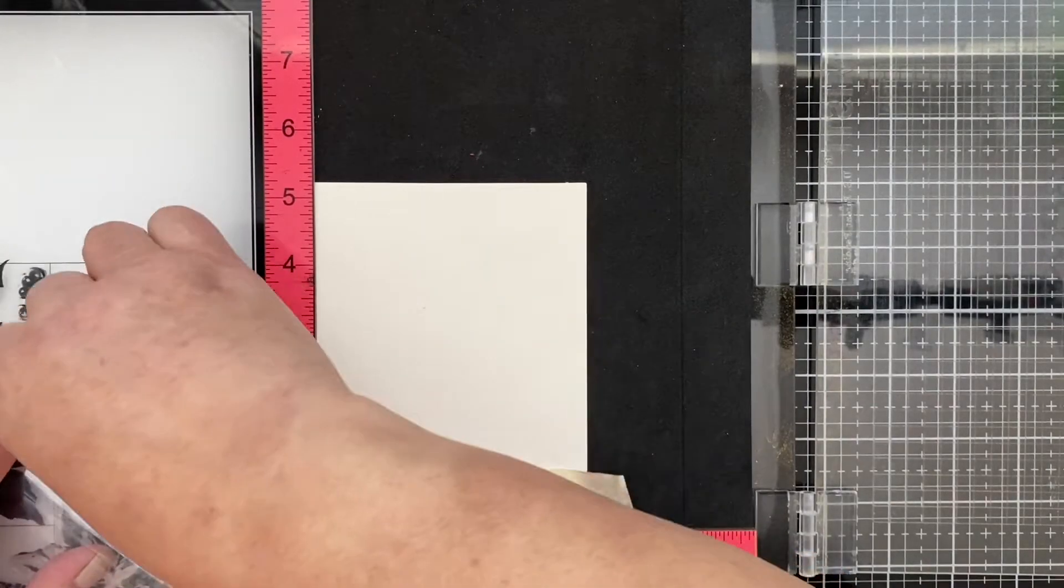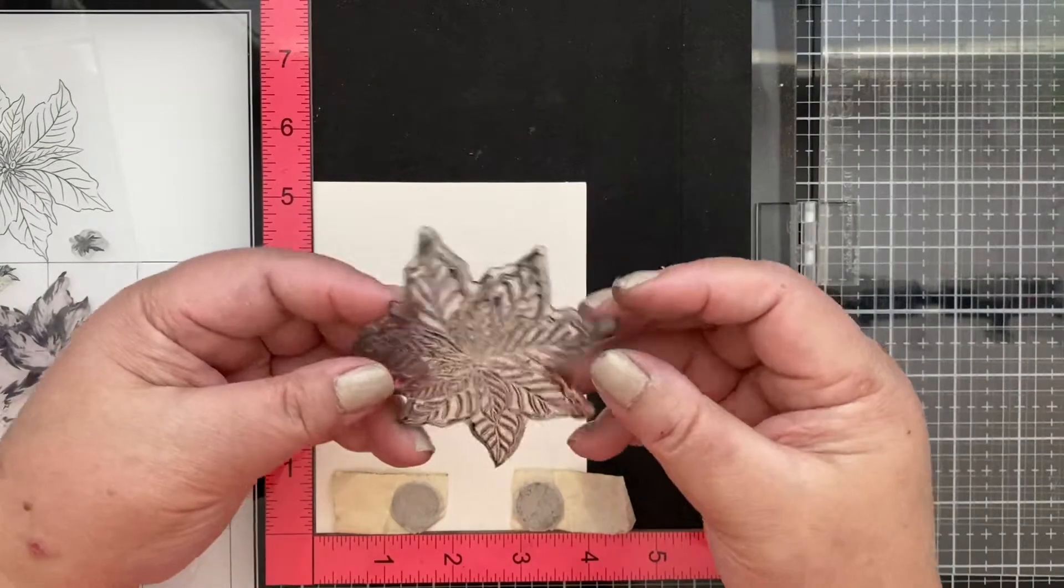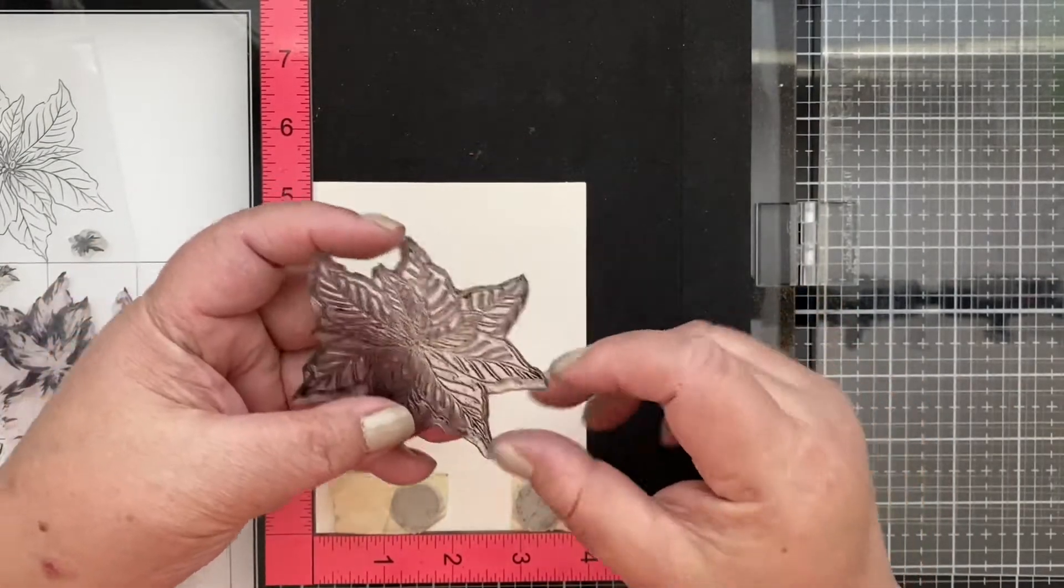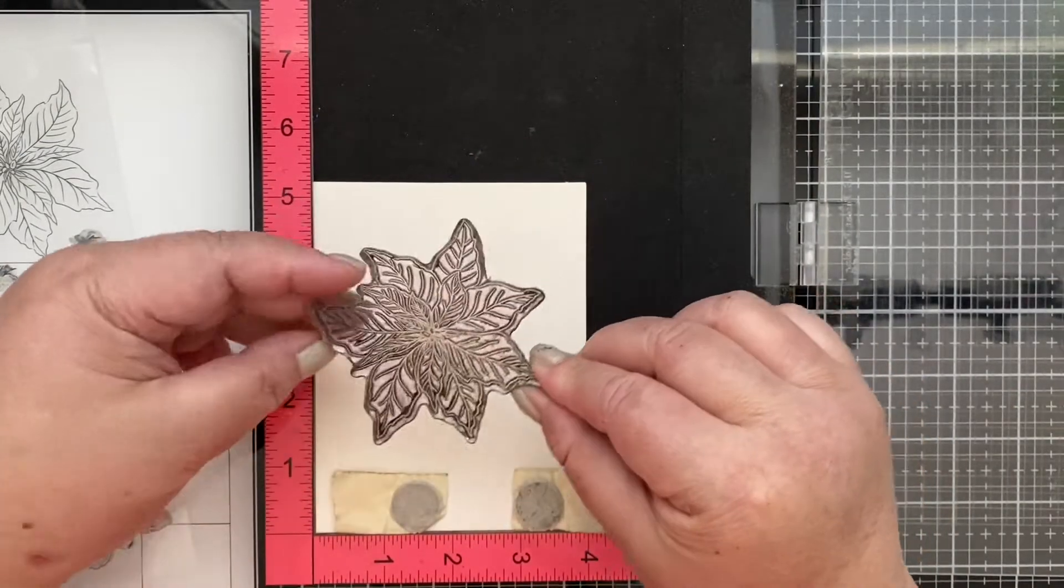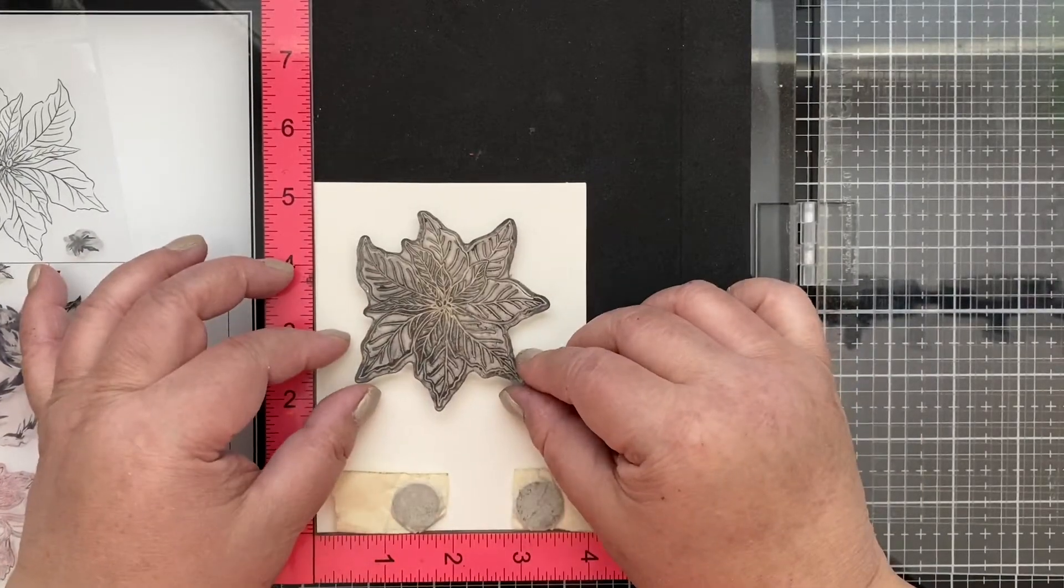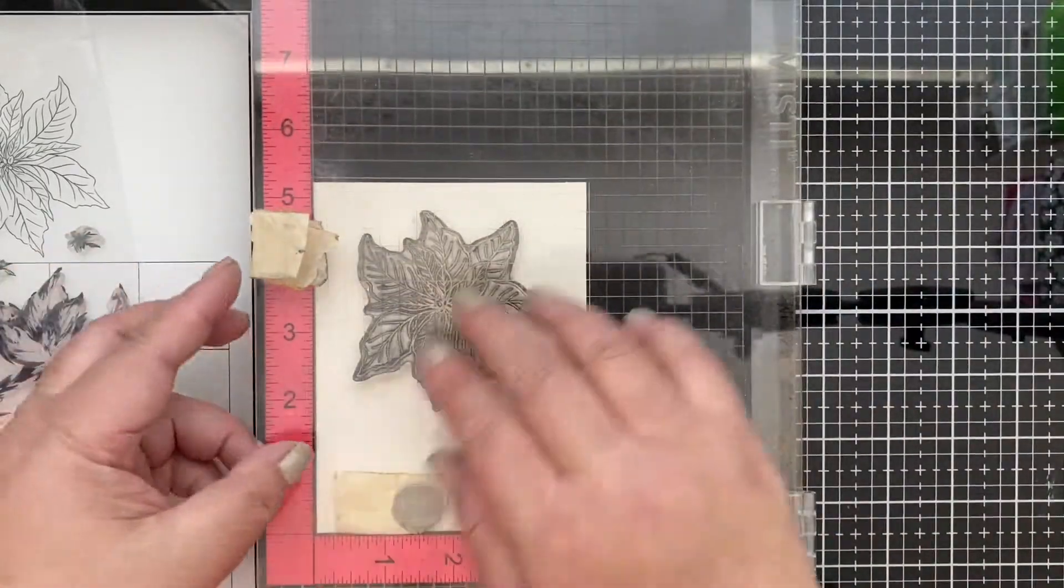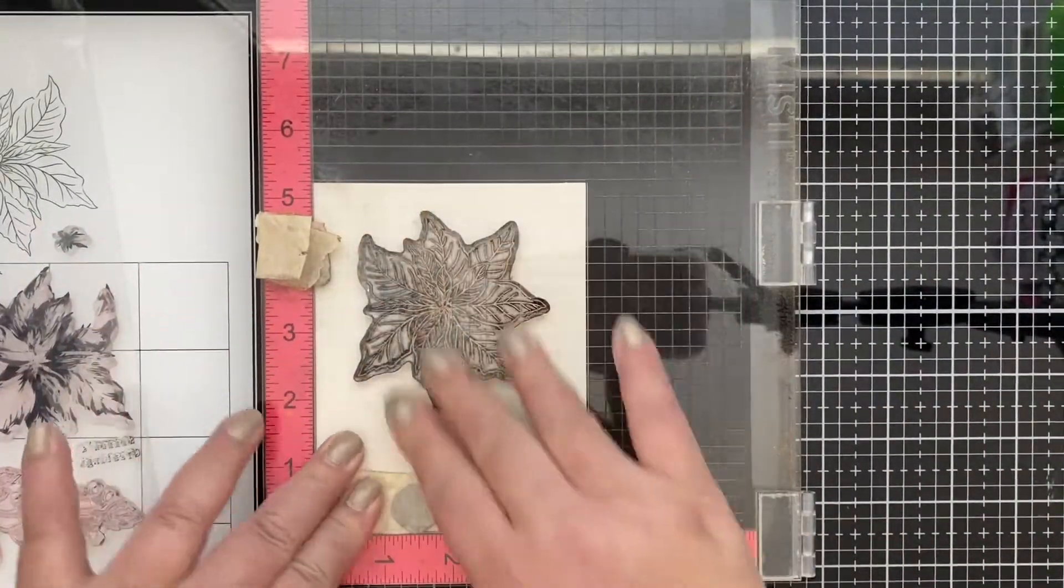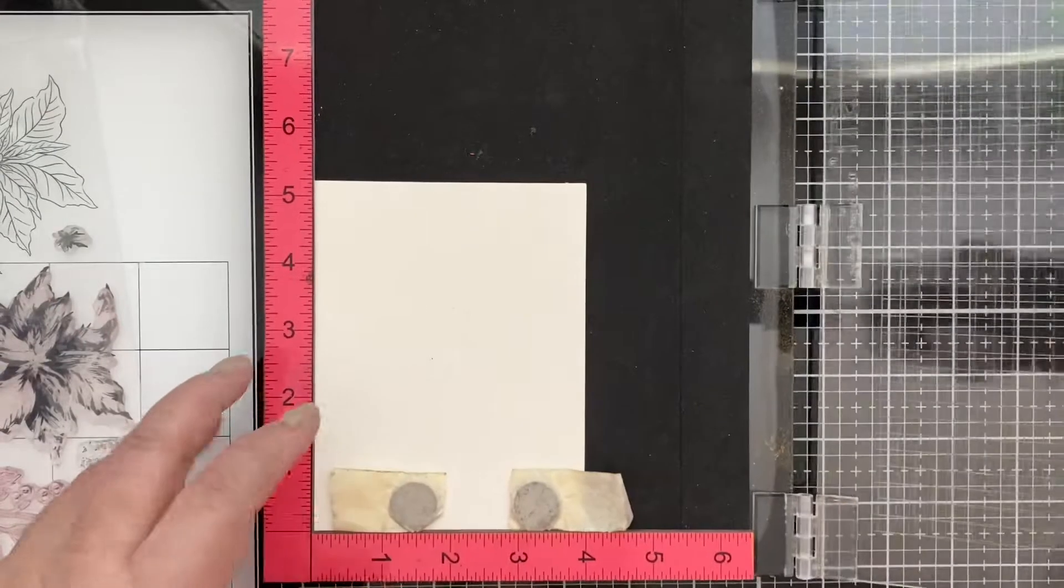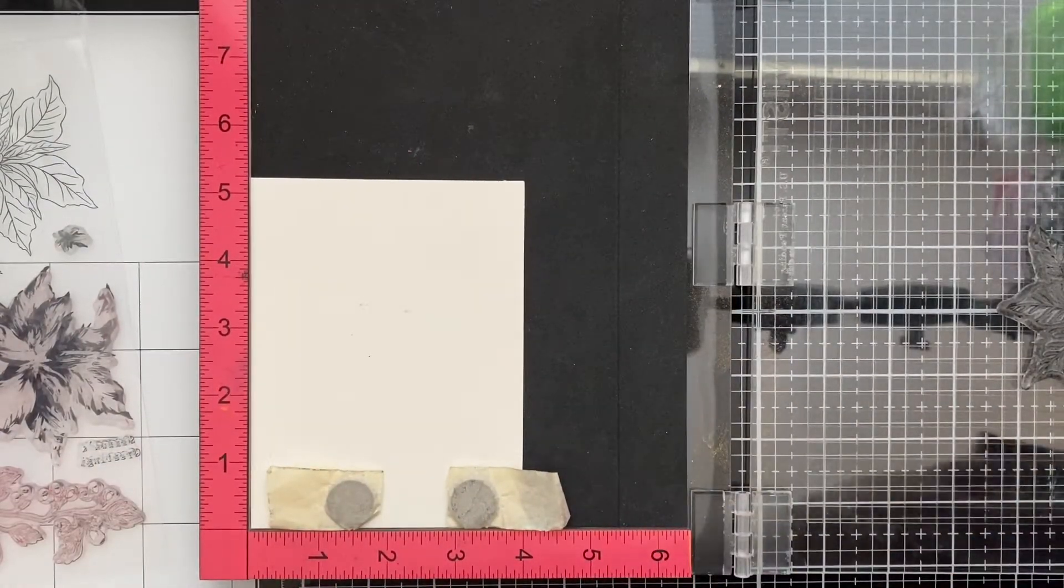This is the outline stamp, it's a little grungy right now because it's been used several times during the process of creating this card. So let me start with the poinsettia here and I'm going to use the black onyx ink from Versafine to stamp the outline.